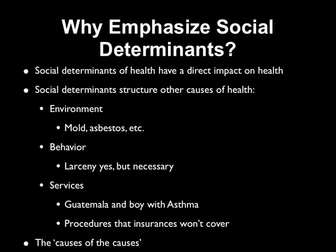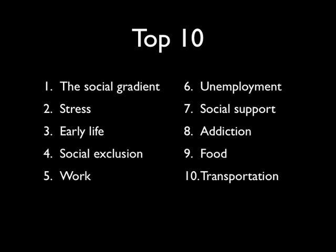Again, we're looking at the causes of the causes. The top ten social determinants of health that Sir Michael Marmot and the WHO Commission on Social Determinants of Health have identified include the social gradient. Elements of the social gradient appear throughout all of the remaining determinants — it is a standalone determinant, but its elements run throughout the remainder.